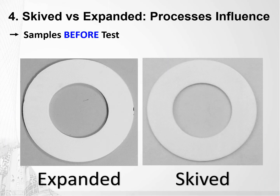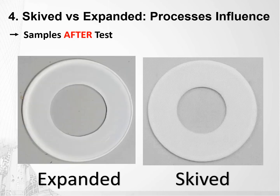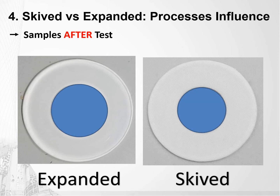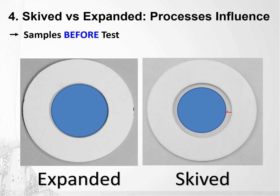Here are the images of the gaskets before the test, and here are the images of the gaskets after the test. It is possible to easily see how much the ID of the skived gaskets has flowed and decreased. Adding circles to compare the changes with the original ID of the gaskets before the test makes it obvious how badly skived PTFE gaskets can be affected by creep. That's why special care must be taken if used at elevated temperatures.